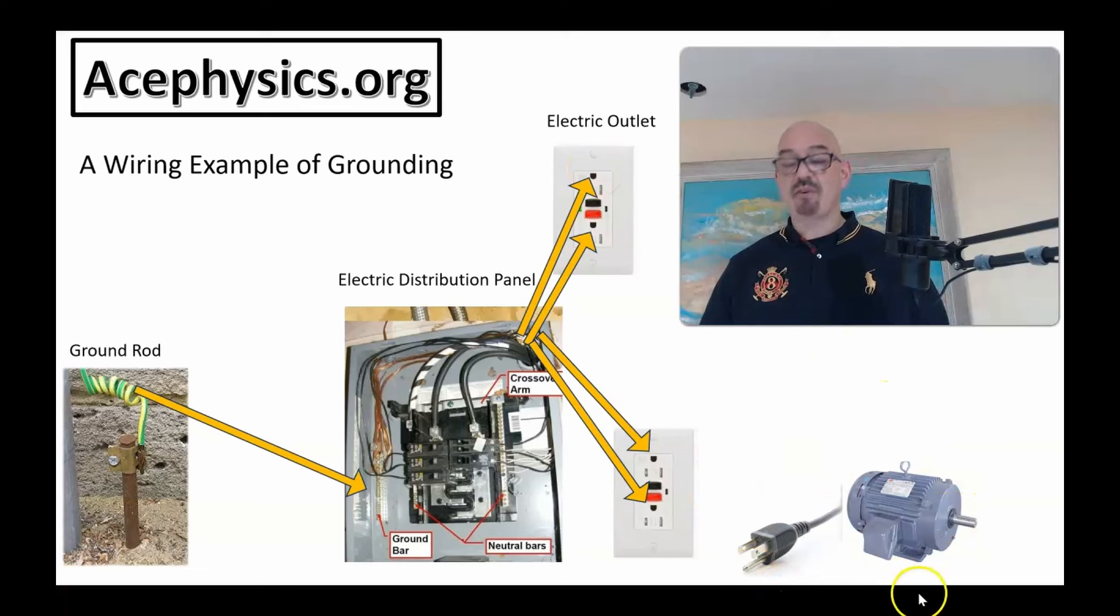Imagine here is an electric motor. If the electric motor runs and is not grounded, then leakage current would cause the outside metal case of the electric motor to charge up. And if you went and touched the electric motor, you would get an electric shock.